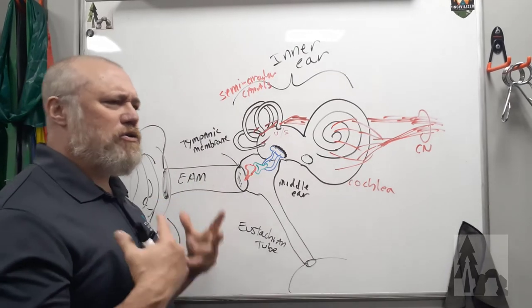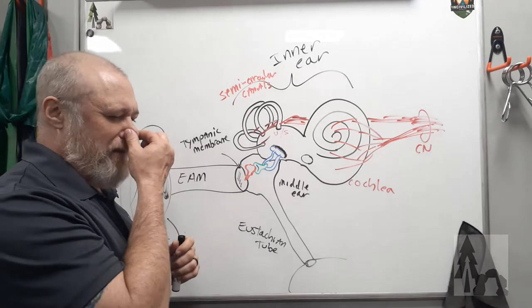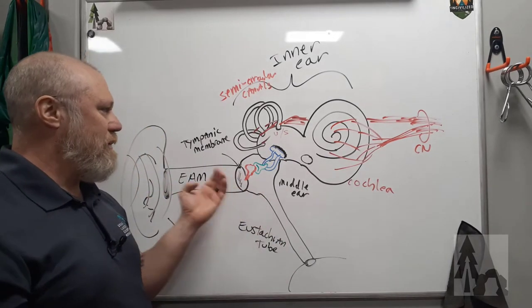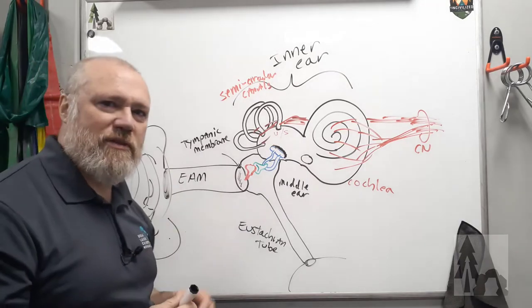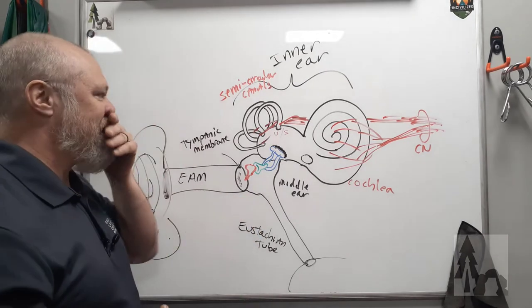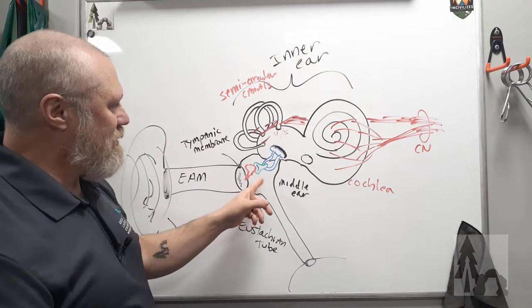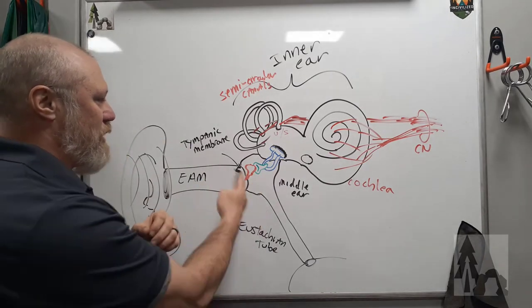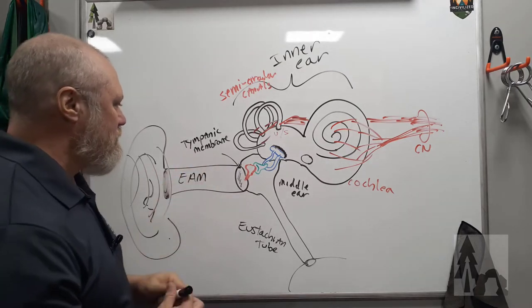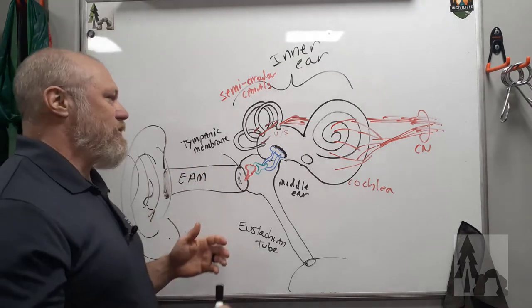If you yawn or chew gum or stretch your mouth real wide, or sometimes push, force air through the eustachian tube, you can pop that eardrum. That's what that sensation noise is when your ears pop, and you go up in a plane or something. Little kids that are yowling and tugging at their ear, maybe they've got a middle ear infection, and the pressure is putting on the eardrum, causing pain. There's different things you can do there. We'll talk about that in another video.